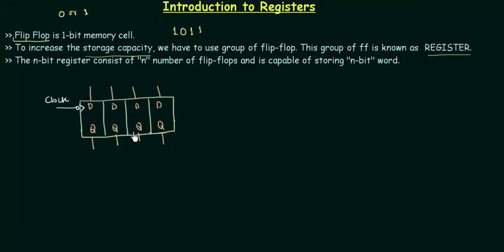One very important thing to note: the clock is internally connected and applied at the same time to all four flip-flops. In a sequential circuit, the clock pulse is not generated individually for every operation. I am not going to generate four different clocks for these flip-flops. Instead, I have a single clock given to all operations — we are bound to follow the clock.